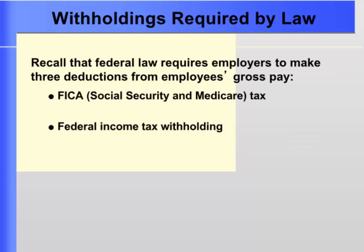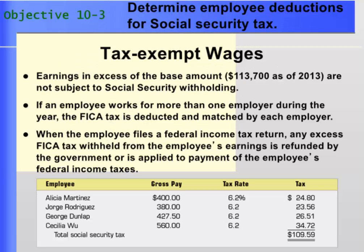Employers will withhold Social Security, Medicare, and federal income tax from an employee's wages. State income tax, if applicable, would also be withheld. Objective 3 involves calculating Social Security deductions. Any wages in excess of $113,700, as of 2013, are not subject to Social Security tax. If an employee works for more than one employer, FICA taxes are deducted and matched by each employer, and when the employee files a federal income tax return, any excess tax is refunded. The employer, however, would not receive any refund.